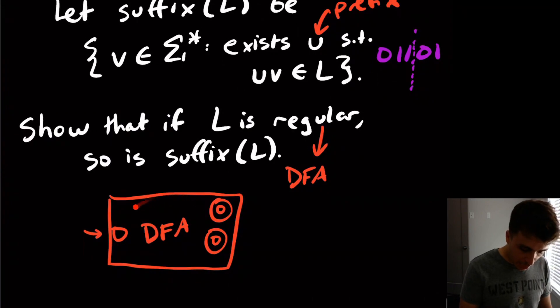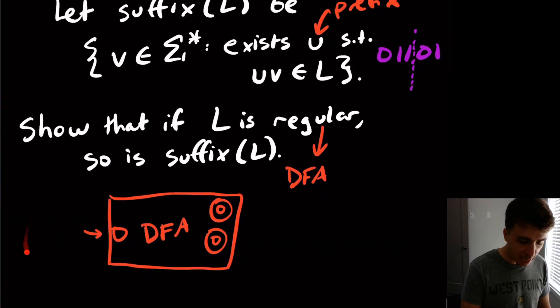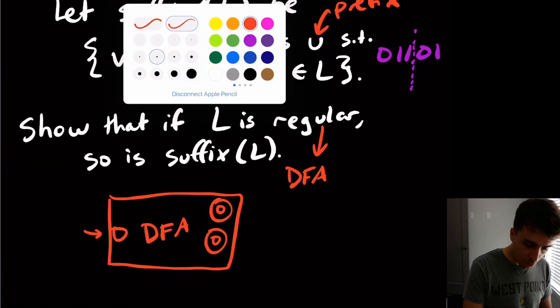So we can't really modify this machine right here because we don't know anything about it. We just know that it's just some DFA. But what we can do is do something extra around the DFA to be able to skip over this beginning part. So that's exactly what we're going to do.